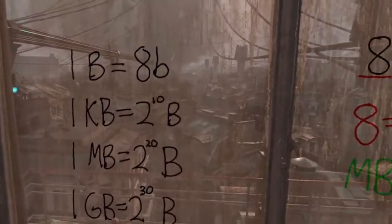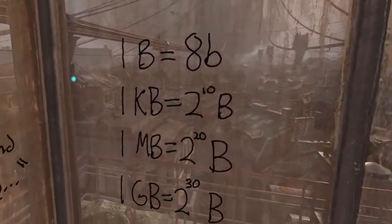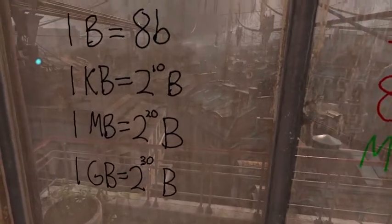Moving on from there, we have 1 megabyte, which is 2 to the 20 bytes, and then 1 gigabyte, which is 2 to the 30.